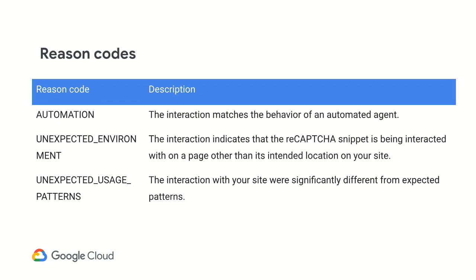The other two patterns are ways for you to potentially identify different behaviors that you wouldn't want to see on your site. For example, the unexpected environment indicates that the reCAPTCHA snippet has been extracted — that's a common way that reCAPTCHA farmers will extract the snippet into a different environment and have it solved externally. As well as unexpected usage patterns, which could be anything where this doesn't match the typical legitimate behavior we see for users on your site on this page.